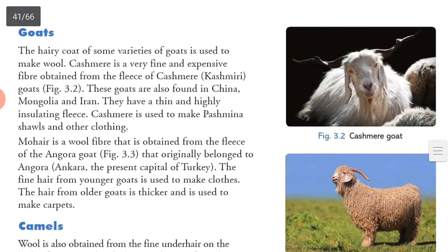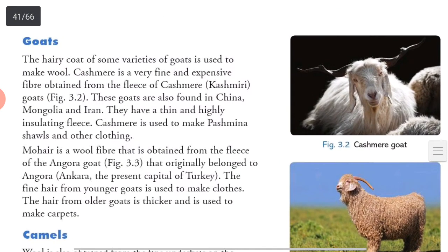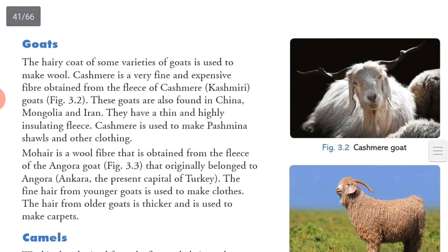Goats — you can see the Kashmiri goat and the Angora goat shown in the pic. The hair of some varieties of goat is used to make wool. Kashmiri is a very fine and expensive fiber obtained from the fleece of the Kashmiri goats. These goats are also found in China, Mongolia and Iran. They have a thin and highly insulating fleece. Kashmiri is used to make pashmina shawls and other clothing.